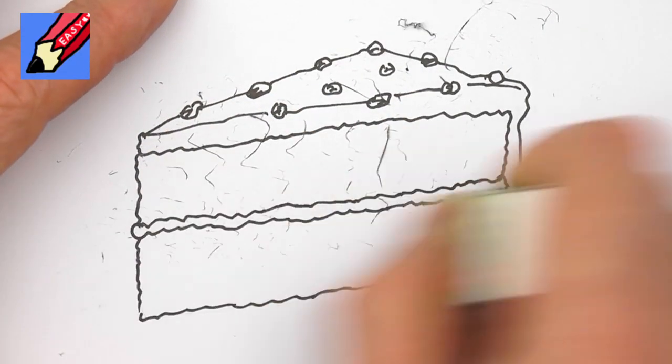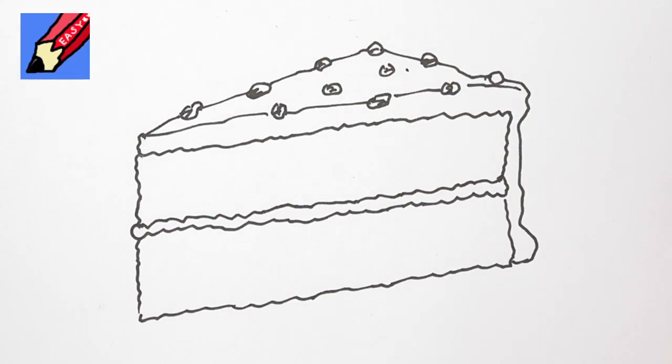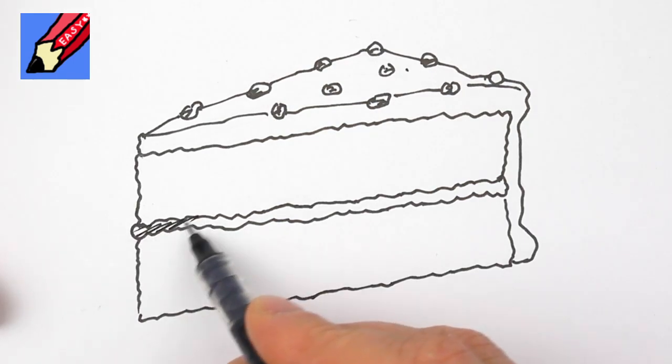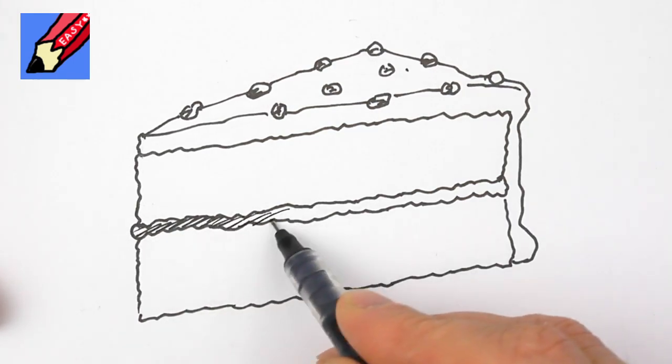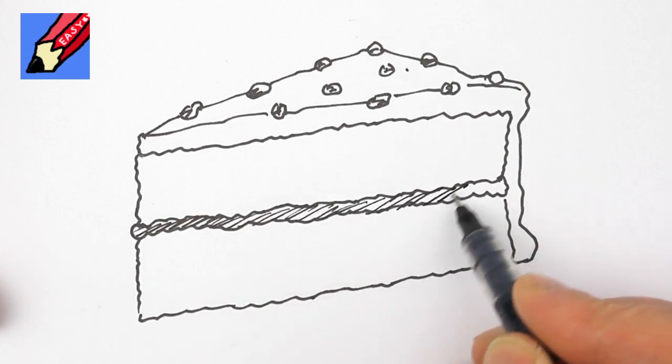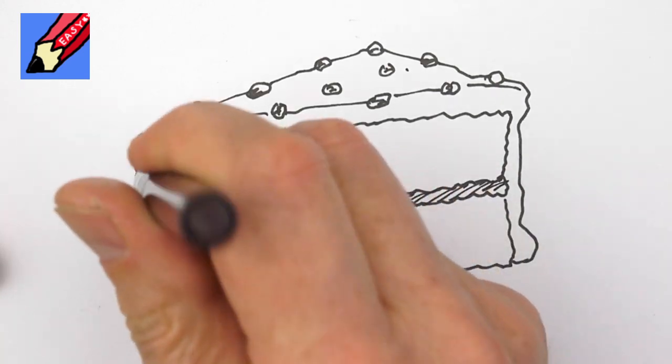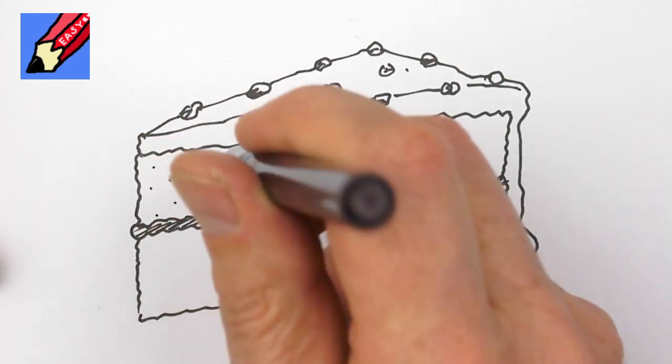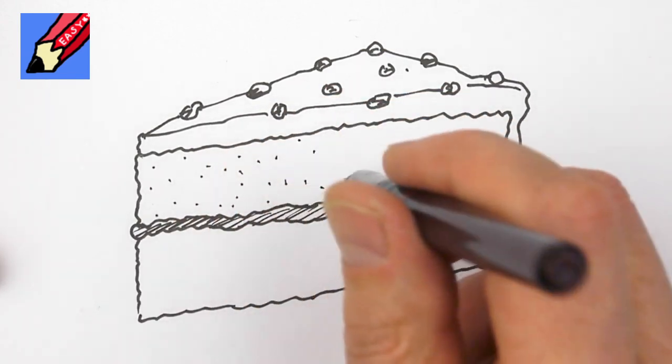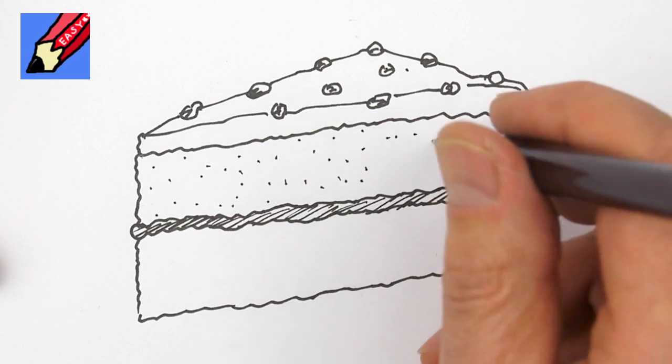When you are sure it is dry erase the pencil lines and it can put the jam in quite dark. Jam, jelly and then the cake itself is going to be very crumbly and spotty so we can just put in hundreds and hundreds of dots.